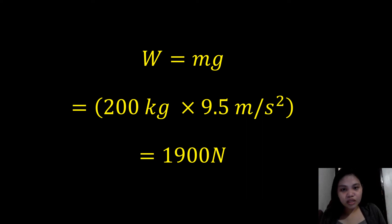We need to calculate the force due to its own mass, which is W equals mg. Mass is 200 kilograms times the gravitational acceleration which is 9.5 meters per second squared, equals 1,900 newtons. Take note, it is the force due to its own mass.